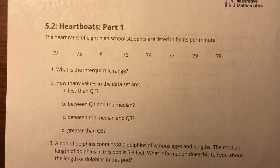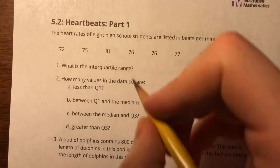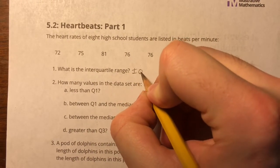All right, 5.2 heartbeats part one. The heart rates of eight high school students are listed in beats per minute. What is the interquartile range, also known as the IQR?